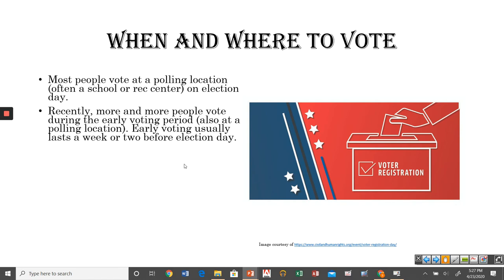More and more people are voting during what's called the early voting period. National elections are always the first Tuesday in November — that's the official Election Day. But generally speaking, you can vote for a week or two prior to Election Day by going to a polling location and voting early. In Texas, early voting usually ends the Friday before Election Day. So if the election is November 3rd, early voting would likely end that Friday — though you should verify the exact dates.